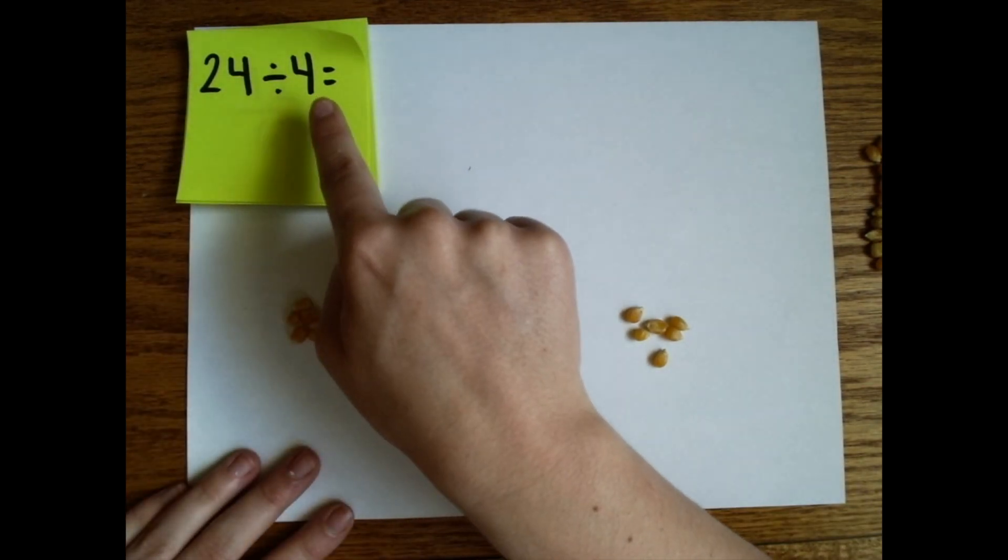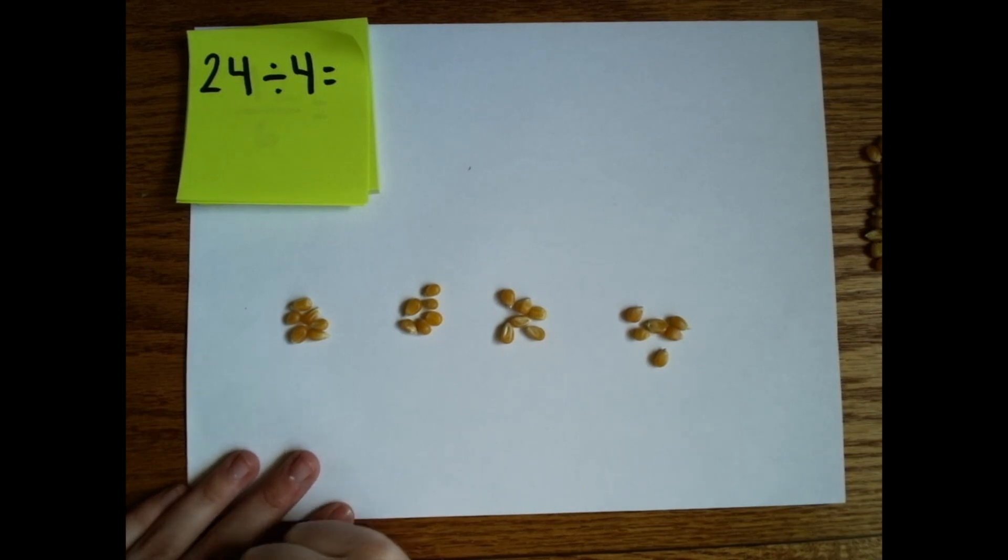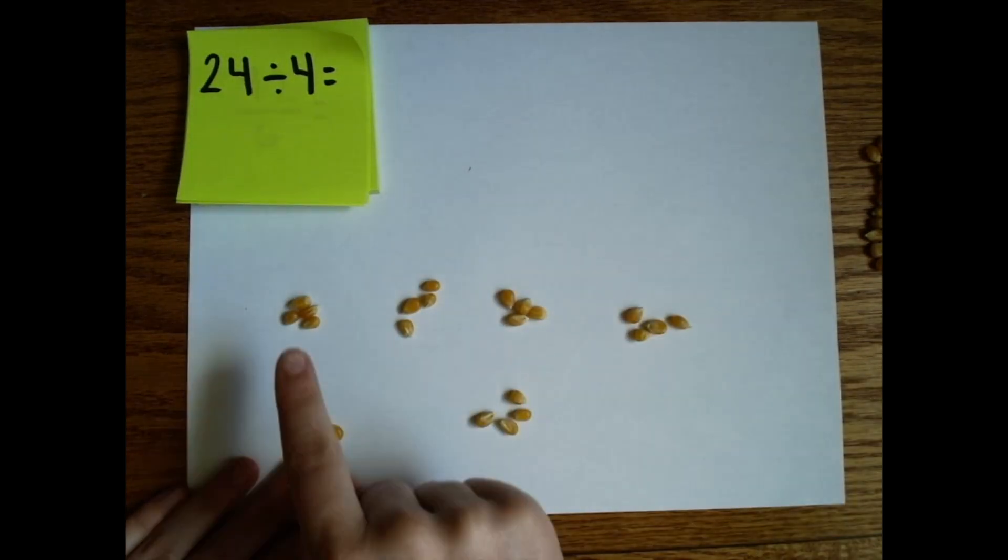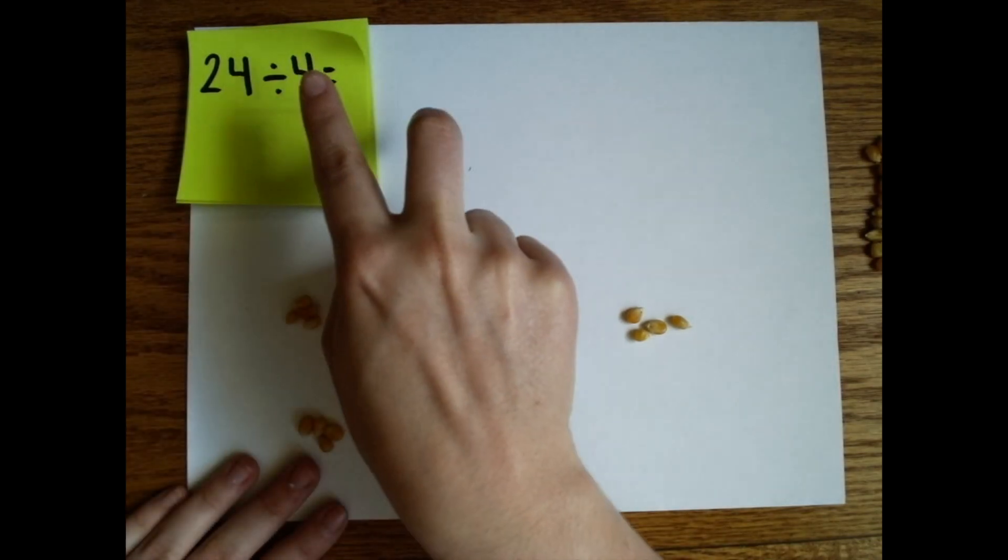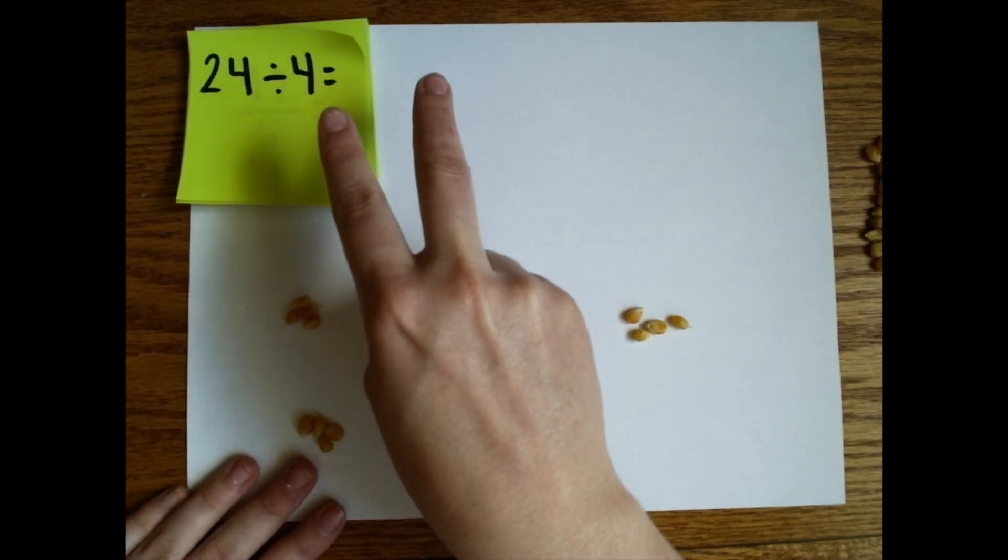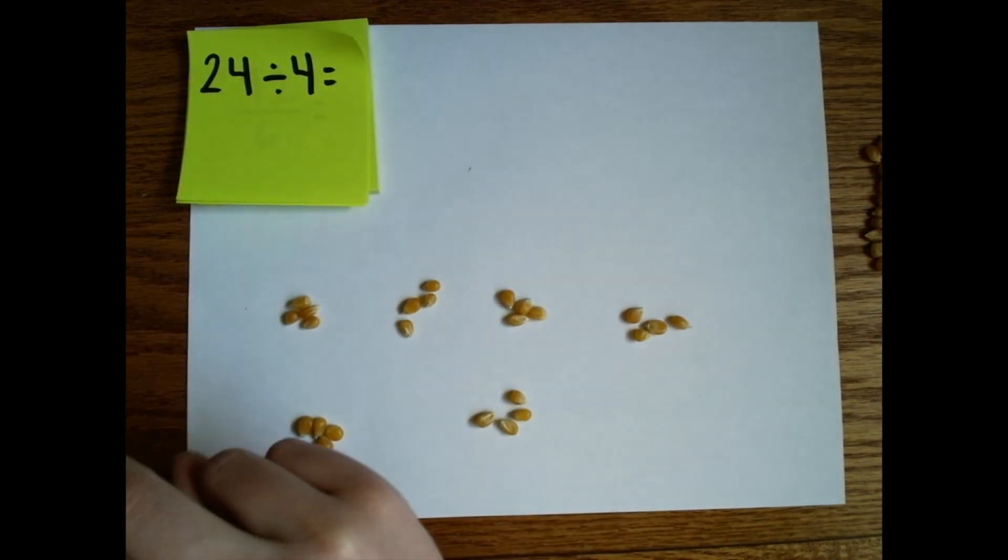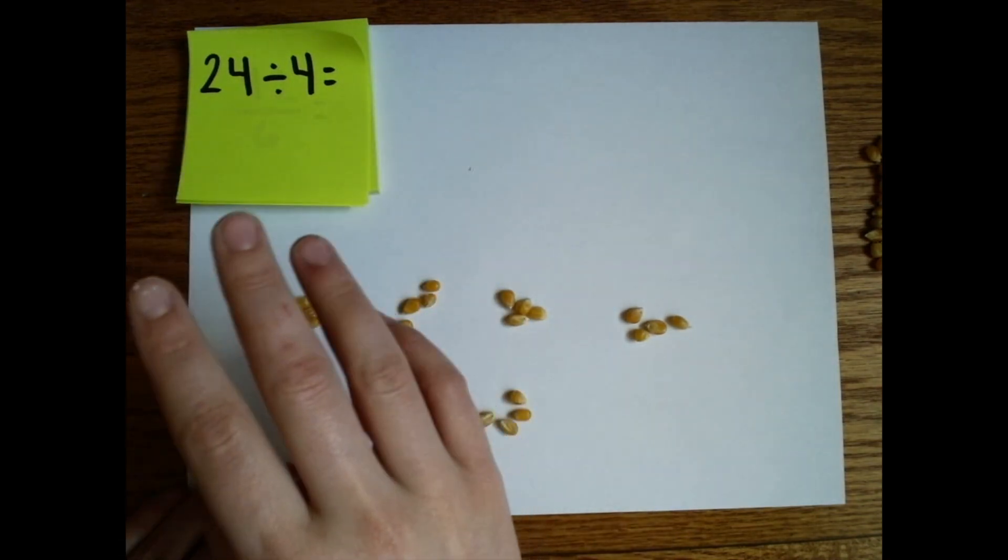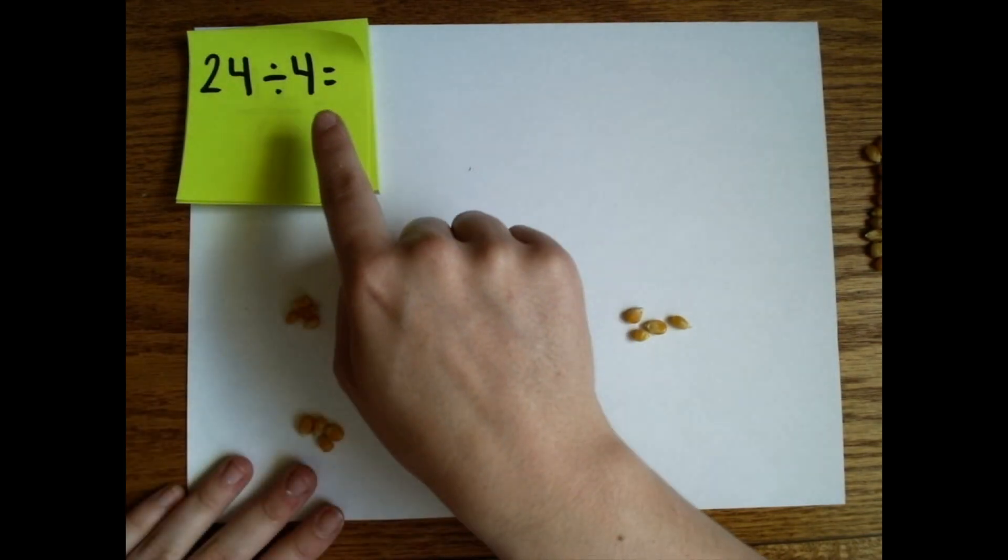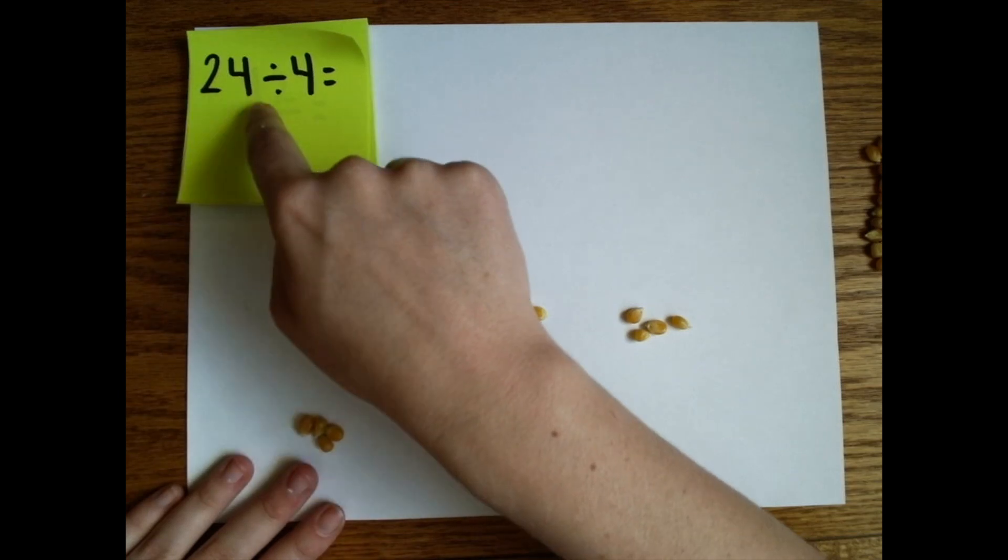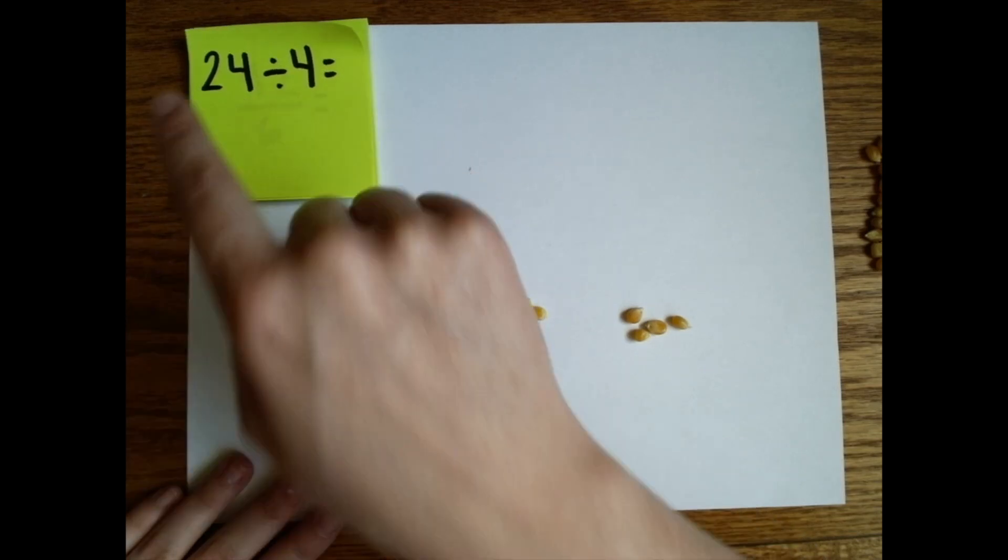If I flipped it and did 24 divided by six, what do you think? How many would be in each group? Let's really quickly check. Six groups this time, four in each. So you can see these numbers are interchangeable. Just like with multiplication, how you could flip those two numbers and still get the same answer. You can flip the quotient and the divisor and keep the dividend the same. It'll still end up being the same.